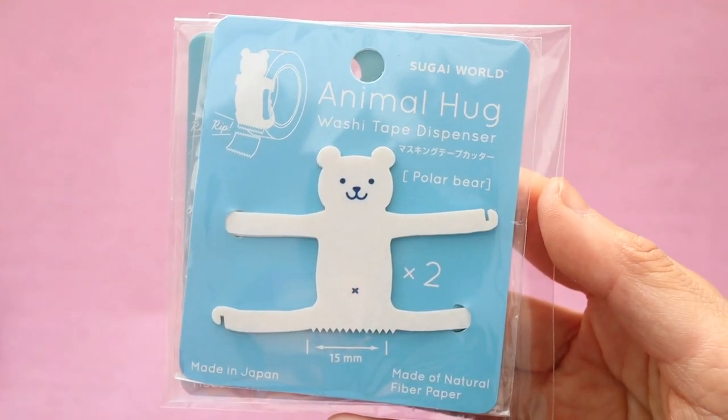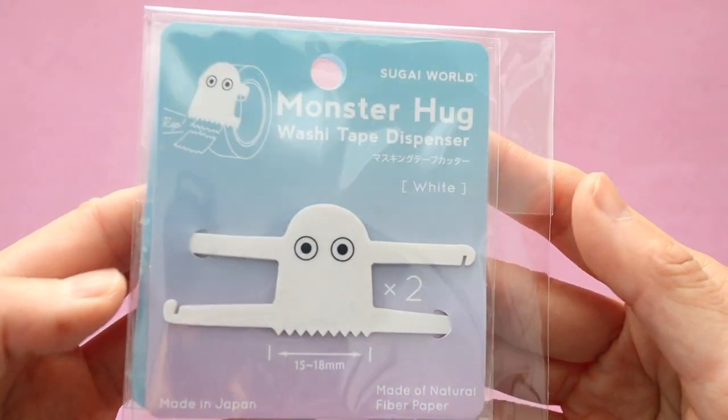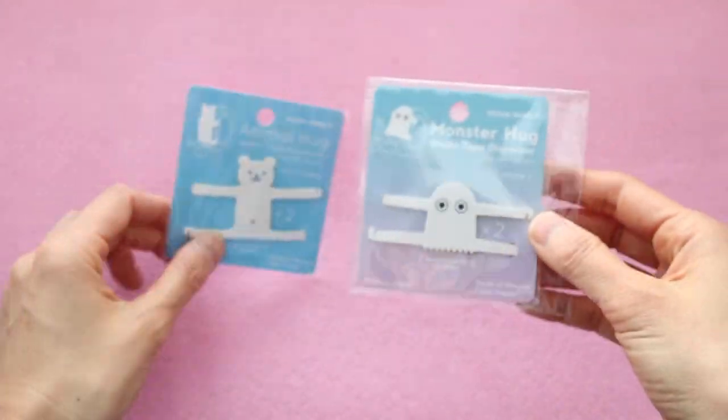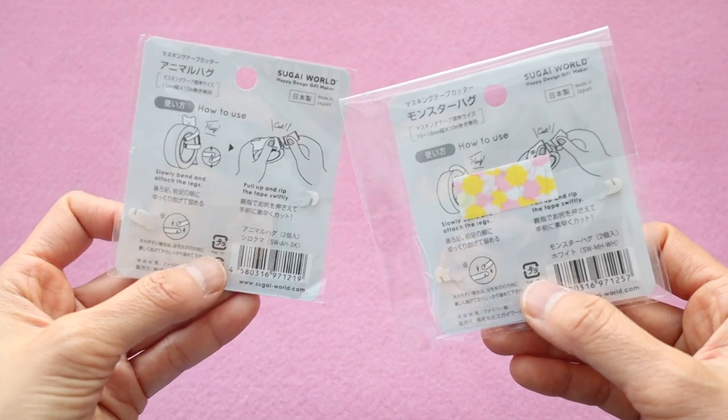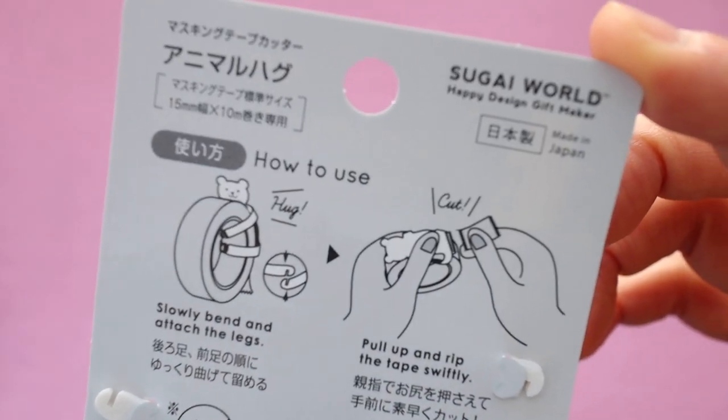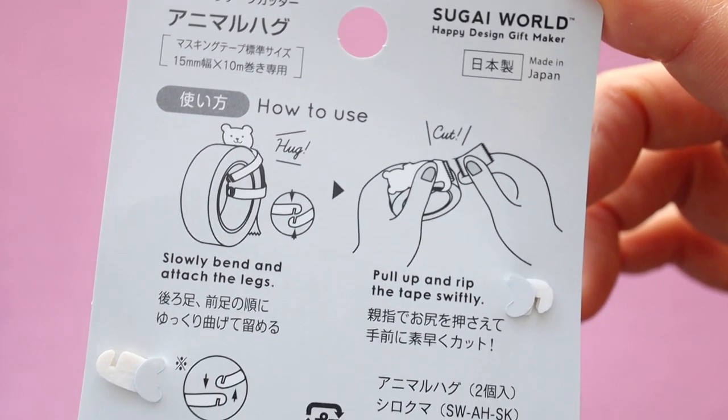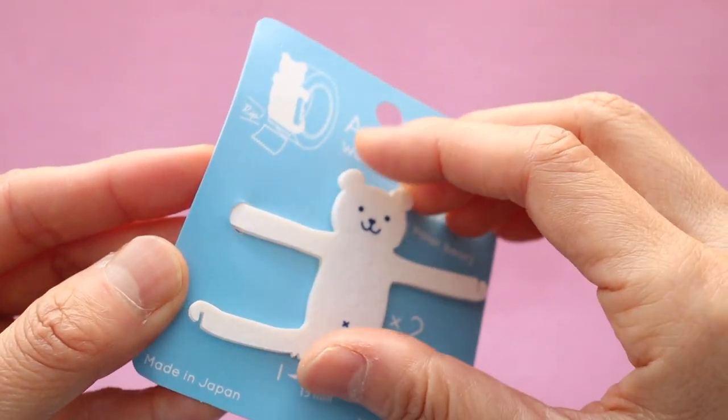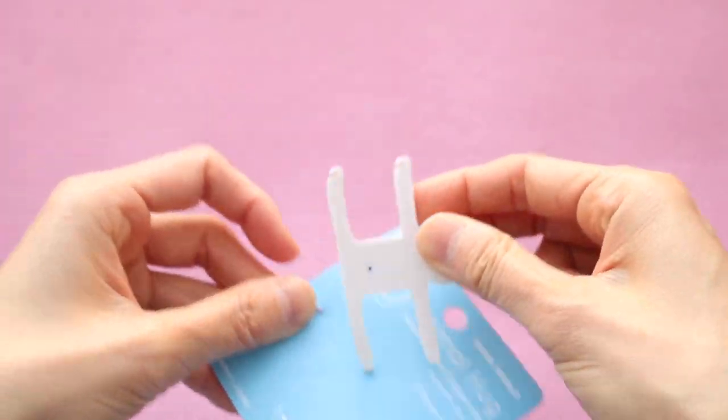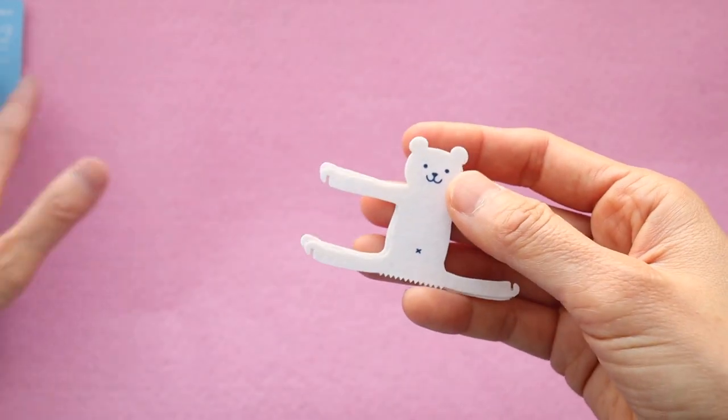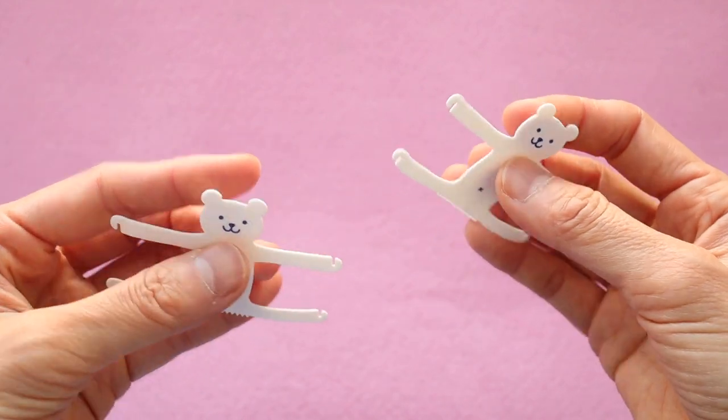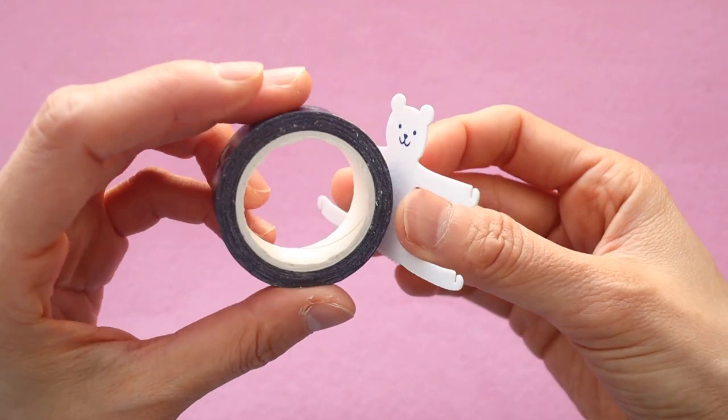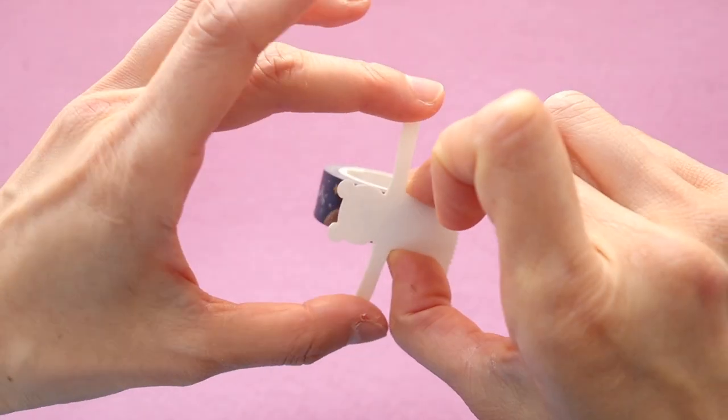These next two items are so adorable. Can you guys guess what these are? These are actually washi tape cutters. One is in the shape of a little monster, the other one is in the shape of a little bear. You basically just wrap it around your washi tape like this, and you try to clip the arms together. I'm not really sure what this is made out of. I don't think it's made out of plastic. It's made out of some sort of flexible material. But it's really cute. Each pack comes with two tape dispensers. You just wrap the arms around the washi tape.